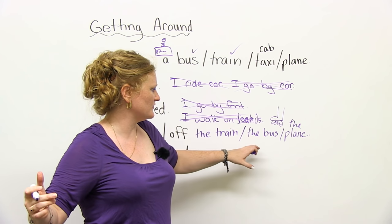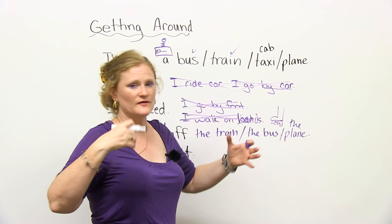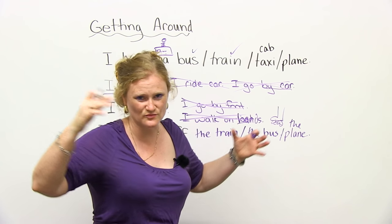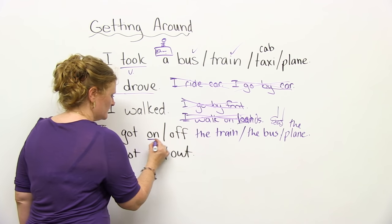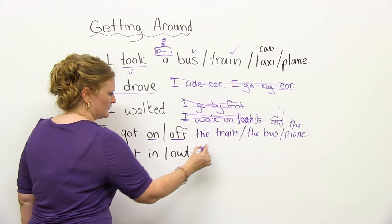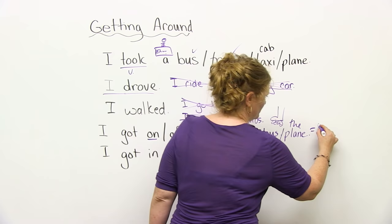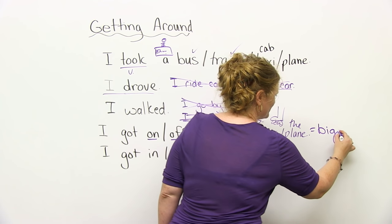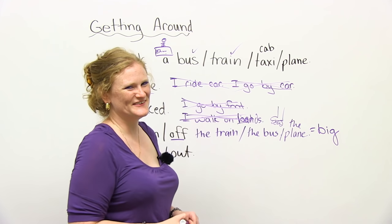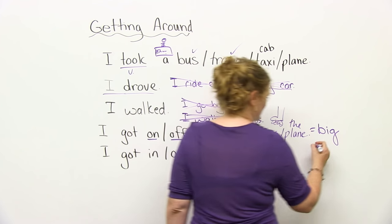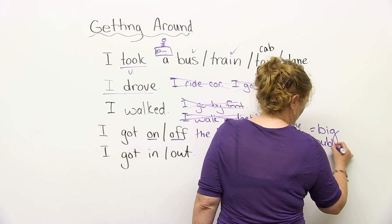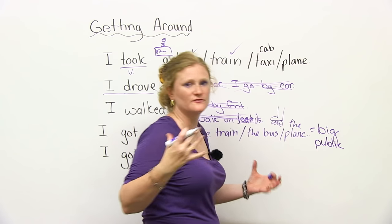So a train, a bus, or an airplane, you have to pay. It's really big and you can fit many people on it. So you're going to get on or get off something that is very big. You're going to get off something that's very big. Or if it's public transportation, it can fit many people.